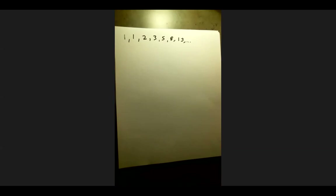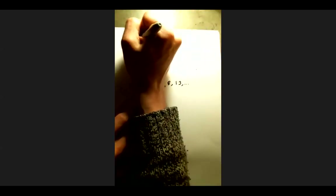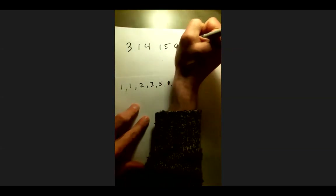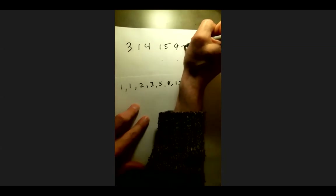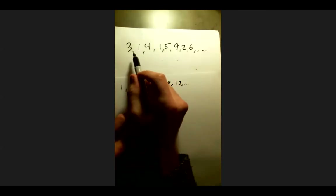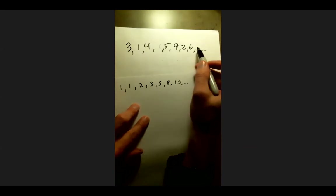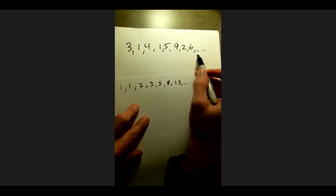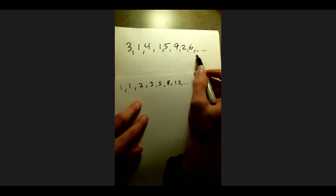Not all sequences have a clean, simple formula. For example, if you listed the digits of pi — 3, 1, 4, 1, 5, 9, 2, 6, ... — you can find the next digit, but there's no clean formula. This certainly isn't arithmetic or geometric. Every now and then you'll see in the news that they've discovered the next thousand digits of pi, precisely because there's no nice formula. In this class, we'll focus exclusively on sequences where there is a formula.